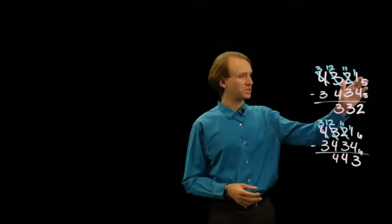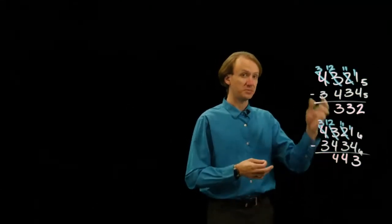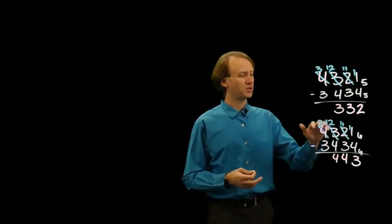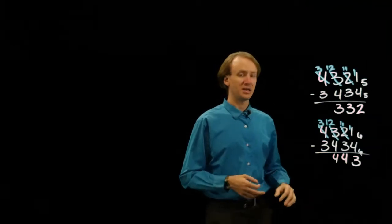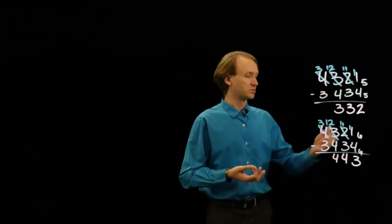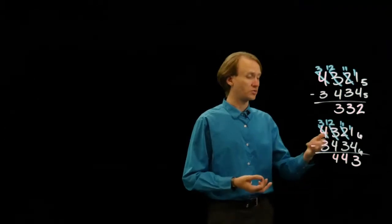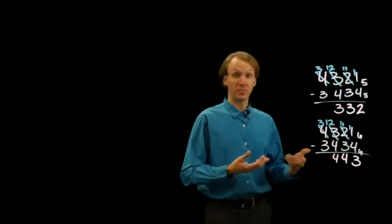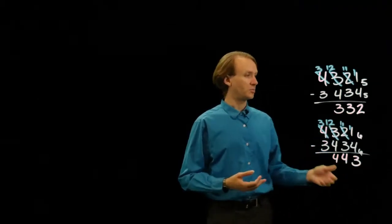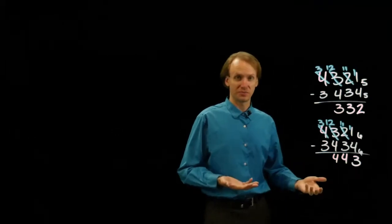So in this case, I increased the size of my base by 1 but kept the numbers the same, which meant all of those borrows had a slightly greater value. Increased my base by 1, so the value of those borrows went up by 1 as well. As a result, my number got 1 larger in each of those places.